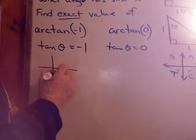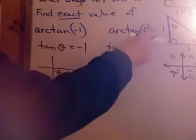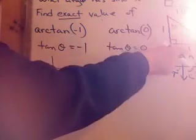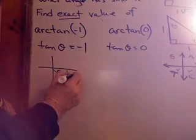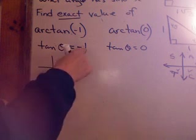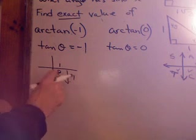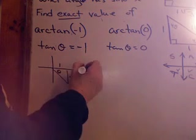My θ has to be here. If the tangent is negative 1, tangent is opposite over adjacent. Opposite over adjacent, and I need 1. So, it's got to be a 45. This is negative 1. This is 1. Tangent of that θ, negative 1 over 1, which is negative 1. What is that θ?